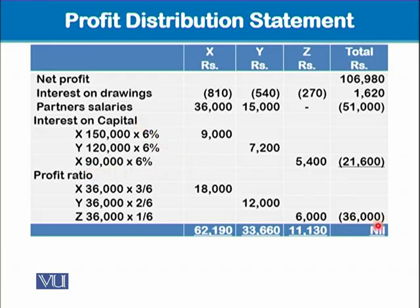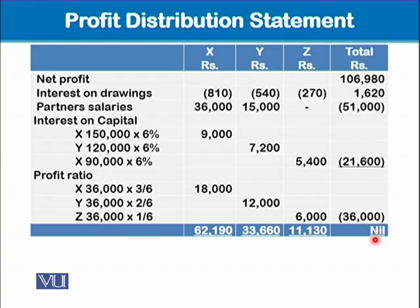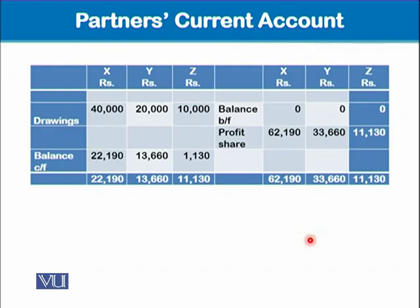The remaining balance of 36,000 is divided among the partners in their profit sharing ratio. The profit sharing ratio is determined based on their experience and business contacts. The ratio of 3:2:1 means 3/6, 2/6, and 1/6 of the 36,000 remaining profit. The balancing figure is zero, so all profit has been distributed among the partners on these three bases.